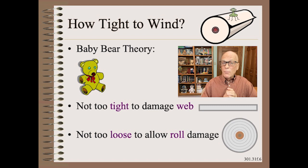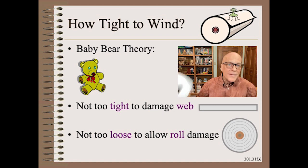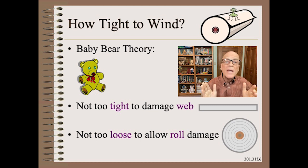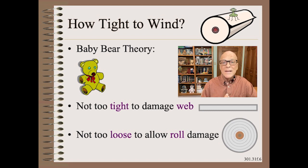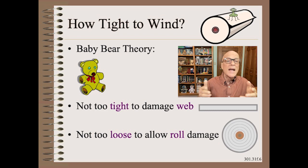So, if we look at our most controllable parameter of tightness, the first question is: how tight to wind? This was known a century ago, and it is still true enough today. It is called the baby bear theory of winding — that is, to not wind too tight, and not wind too loose. All we have done since is to add detail to this recommendation.